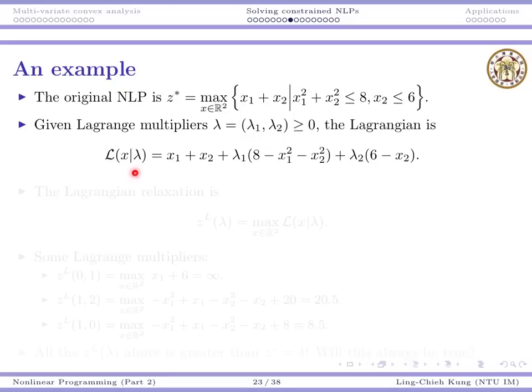So the Lagrangian, by definition, is first the objective function, and then is the difference between the right-hand side and the left-hand side of the first constraint, multiplied with the first Lagrangian multiplier, plus the same for the second Lagrangian multiplier.